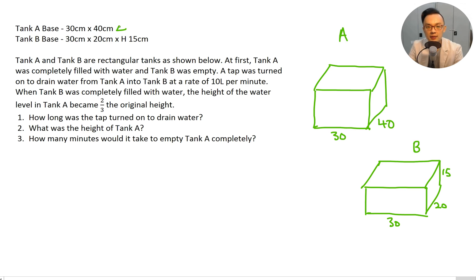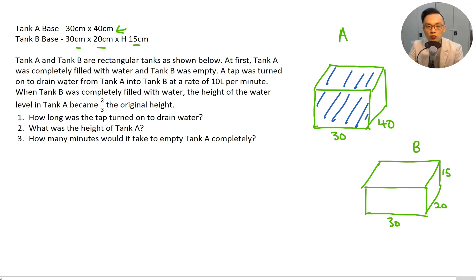Tank A has base 30 by 40 cm, and Tank B is 30 by 20 by 15 cm. Tank A was completely filled with water and Tank B was empty. A tap drains water from A to B at a rate of 10 liters per minute. When Tank B was completely filled, the water level in Tank A became two-thirds the original height, meaning one-third of Tank A's water was drained into Tank B.